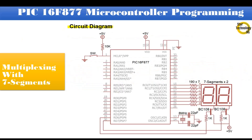Here is the circuit diagram used in our project. It uses the PIC16F877 microcontroller. Pin number 1 is master reset — pressing the switch will reset the microcontroller. Port C is interfaced with the 7 segment display, which is common anode type. All segments are connected to the microcontroller through 190-ohm current limiting resistors. Pins RD6 and RD7 are connected to the common pins of the 7 segment displays through BC108 transistors with 1 kilo-ohm resistors. Pins 13 and 14 interface with an 8 MHz crystal with 22 pF capacitors. Pins 11 and 32 connect to positive 5 volts, and pins 12 and 31 connect to ground.